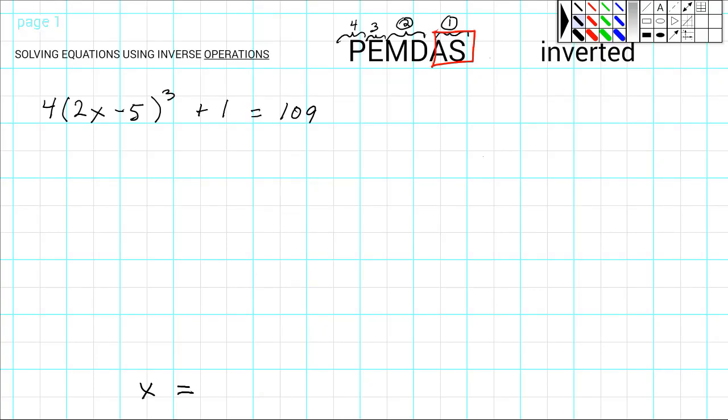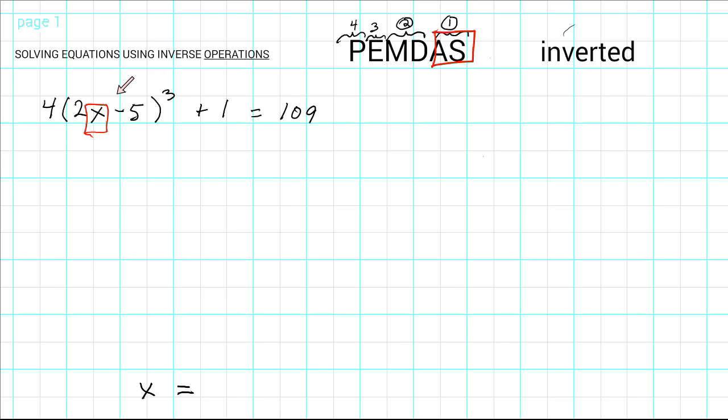It is possible to solve an equation using a series of inverse operations as long as the variable you're solving for only appears in one term in the equation. Now, even though this is a rather complicated looking equation, the x only appears in one place, therefore we can solve it using inverse operations.